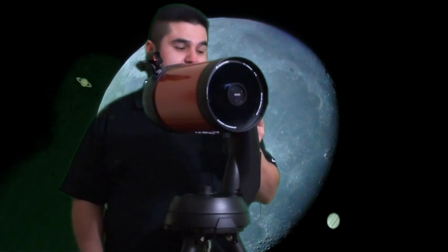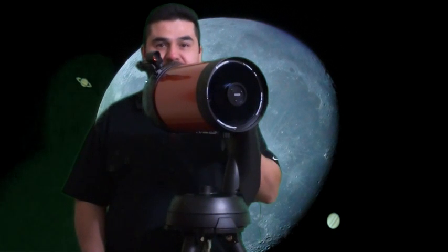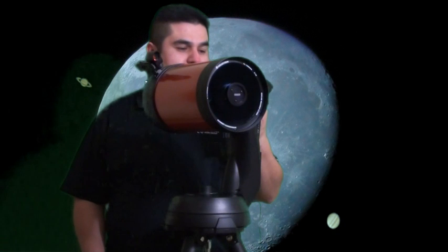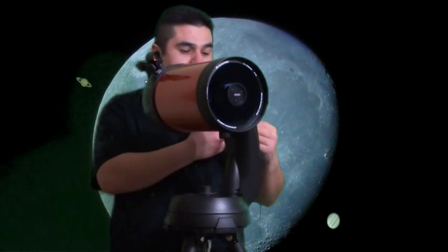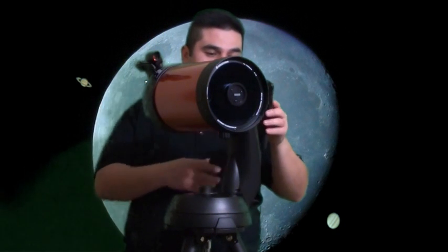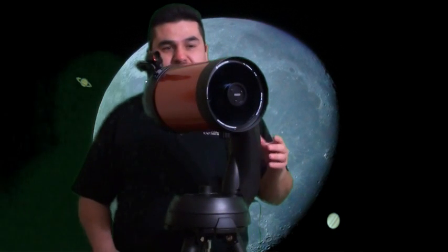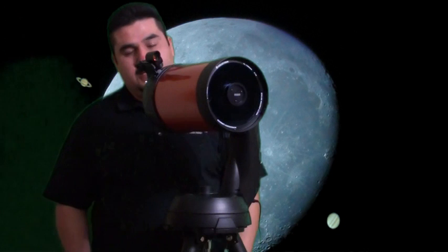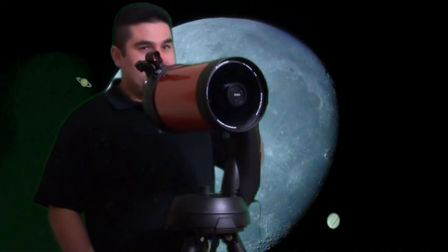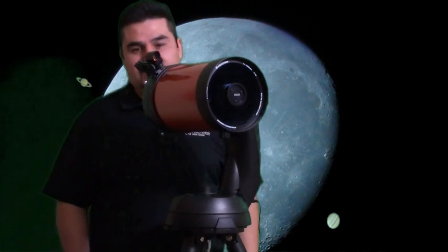then, the telescope will know exactly what you're pointing at, and it's actually going to tell you. Once you do that, you can go ahead and ask the telescope to put whatever object in your eyepiece. And it's going to do to whatever position you want it to.